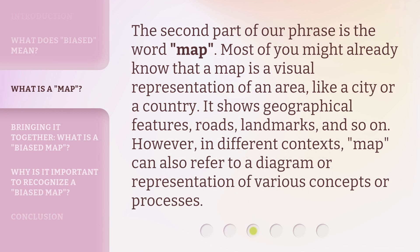The second part of our phrase is the word map. Most of you might already know that a map is a visual representation of an area, like a city or a country. It shows geographical features, roads, landmarks, and so on. However, in different contexts, map can also refer to a diagram or representation of various concepts or processes.